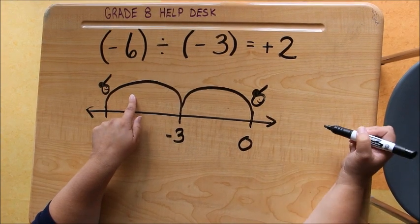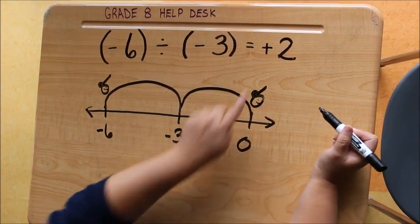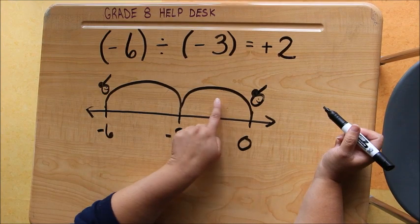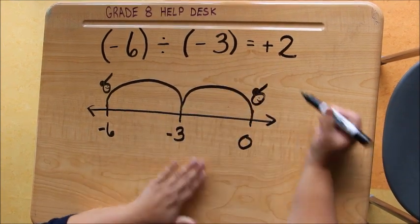Since our person is facing the positive side, or the right-hand side of the number line, our answer is positive, and we've done two jumps, so our number line matches our math.